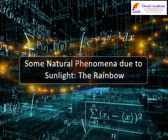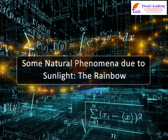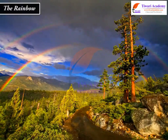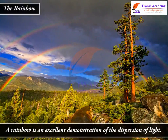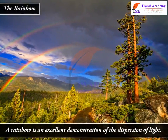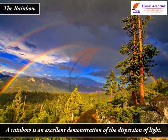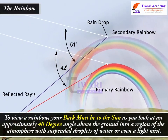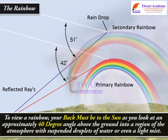Some Natural Phenomena Due to Sunlight: The Rainbow. A rainbow is an excellent demonstration of the dispersion of light. To view a rainbow, your back must be to the sun as you look at an approximately 40 degree angle above the ground into a region of the atmosphere with suspended droplets of water or even a light mist.